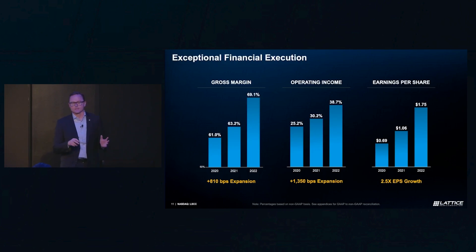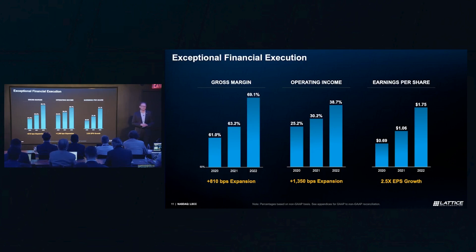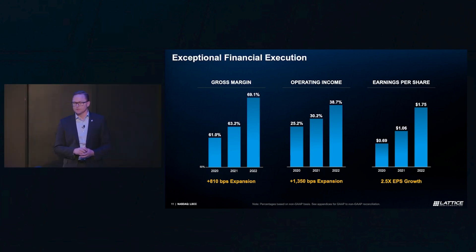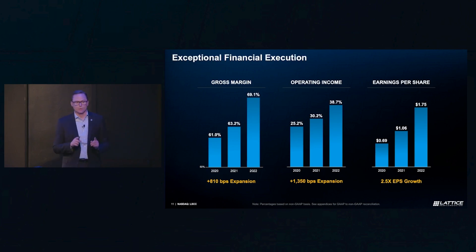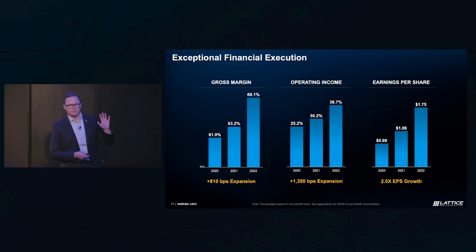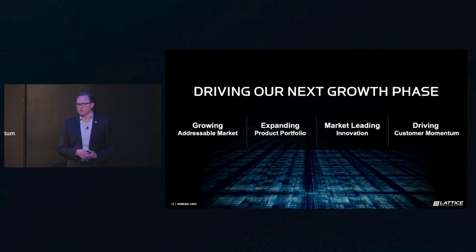Beyond revenue, we've continued to make progress on other financial metrics as well. Sherry will talk in detail about all our financials, but a few highlights: we put in place a new gross margin expansion strategy at the beginning of 2019 that has yielded tremendous benefit — over 800 basis points of expansion in gross margin, over 1,300 basis points of expansion in operating income, and two-and-a-half times higher EPS over the past two years. Safe to say we've made some good progress on that fourth goal around the financials.